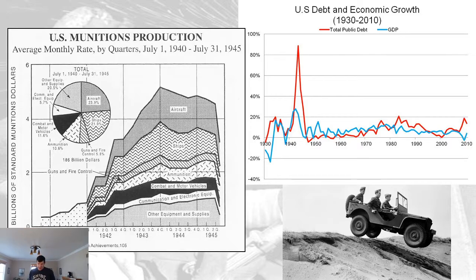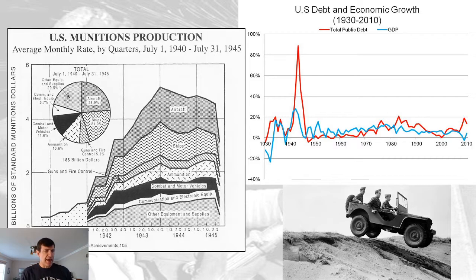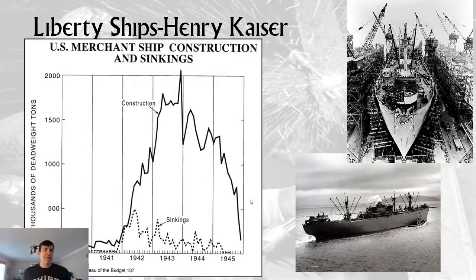The US won not only because of the Soviets, but also because of the bravery of soldiers and hard fighting both in the Pacific and Europe — but production was key. One of the great inventions was the jeep. But one of the biggest examples were Liberty ships: Henry Kaiser's shipping yards took the ideas of mass production and the assembly line and made merchant vessels, freighter ships.